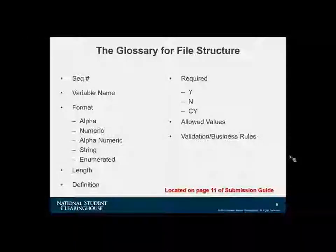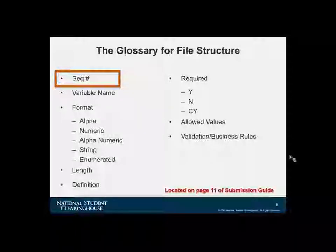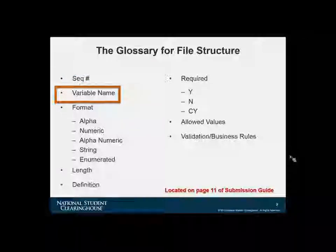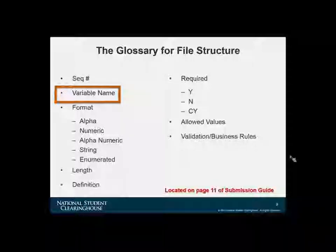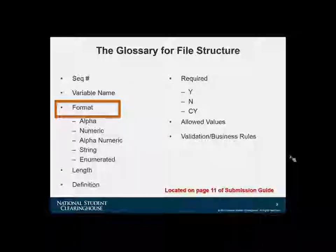We'll go over how the data elements are defined. You're given a sequence number, which is the order in which each data element must appear on your file, followed by the name of the data element — this is also what you would name the respective column headers in your file. Please note that they must be spelled exactly as they are written in the guide, and they are case-sensitive. This applies especially to the financial aid file column headers, which must be spelled out exactly as they appear in the guide.